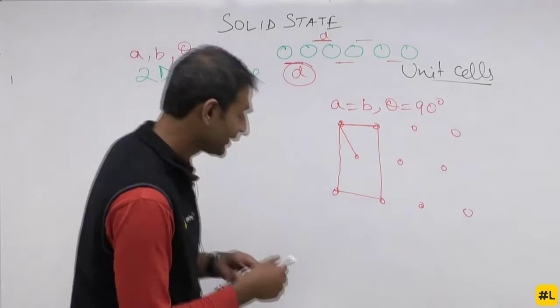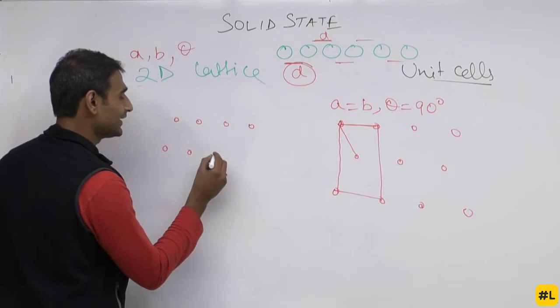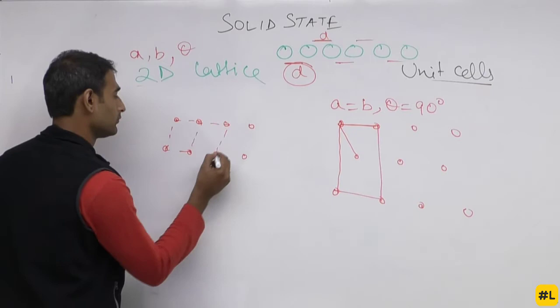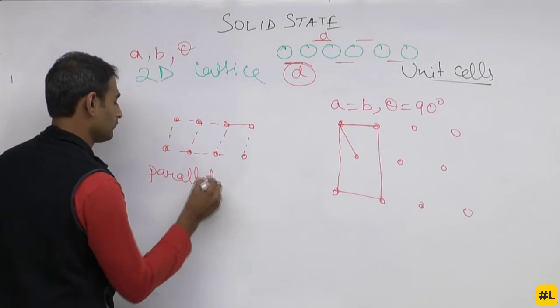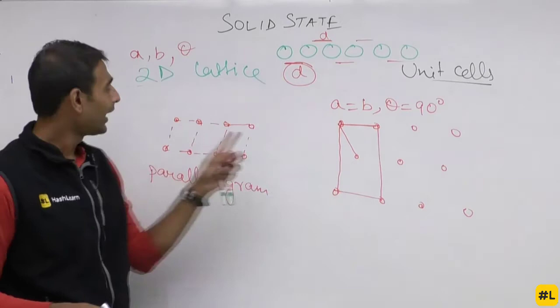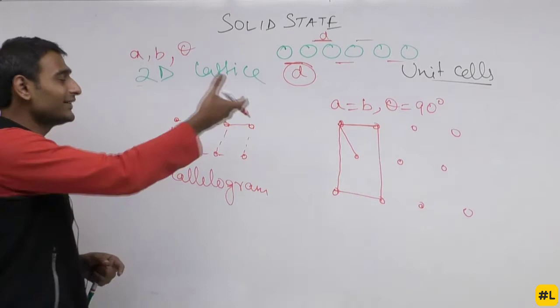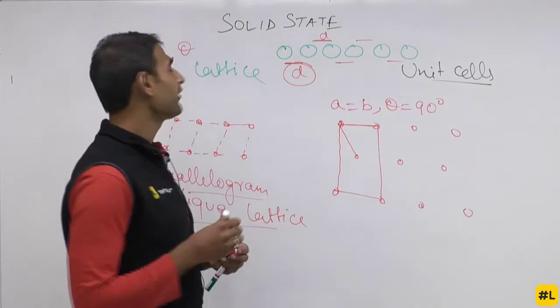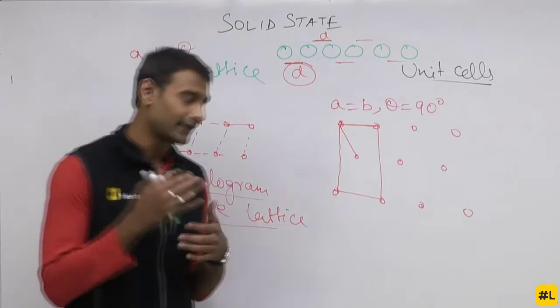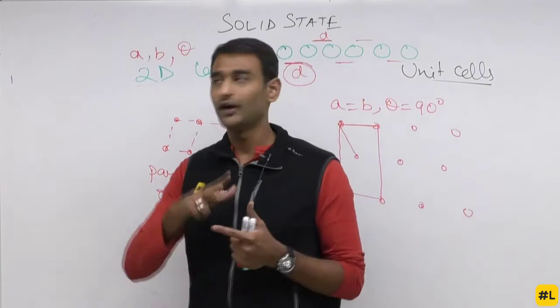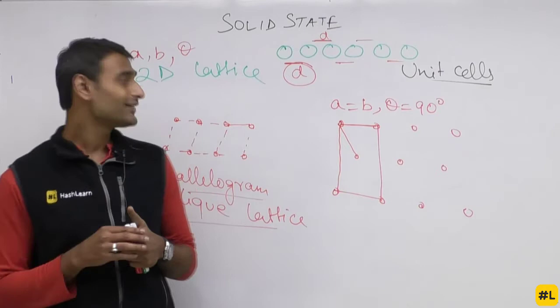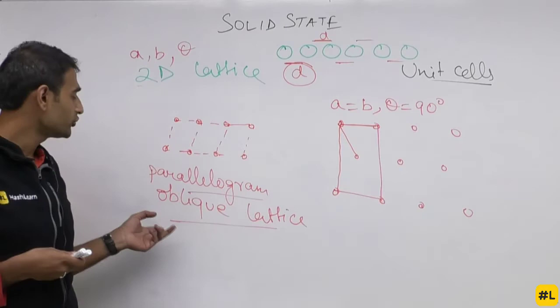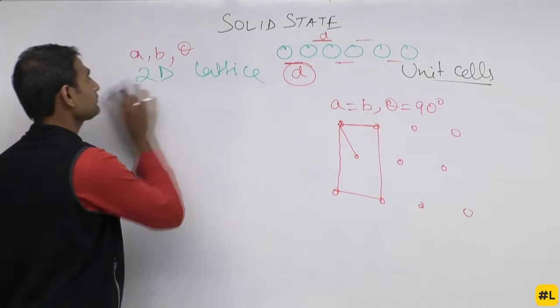The fifth type of 2D lattice looks like a parallelogram — the centers are not aligned like in square, rectangular, or hexagonal. Because it appears oblique, this is known as a parallelogram or oblique lattice. So the five types of 2D lattice are: square, rectangular, hexagonal, rectangular with internal point, and parallelogram or oblique.